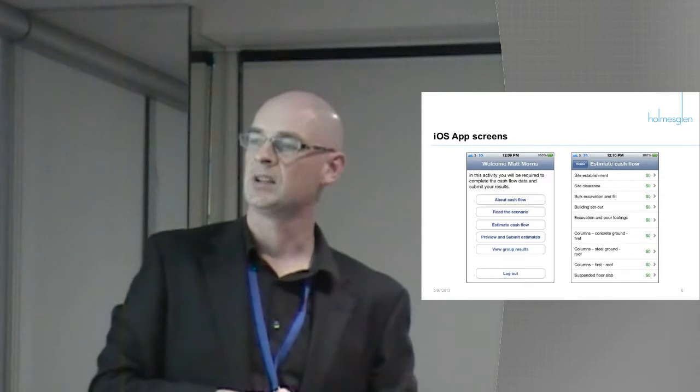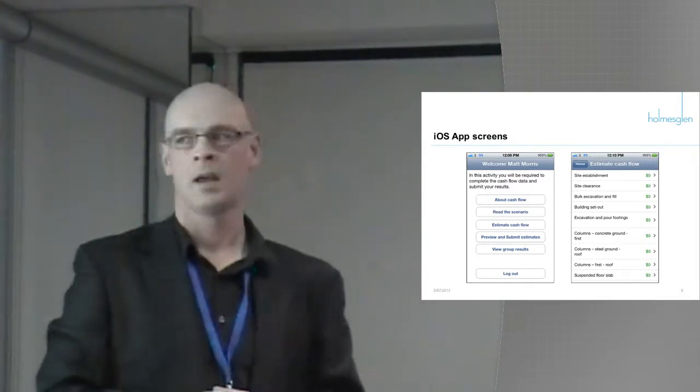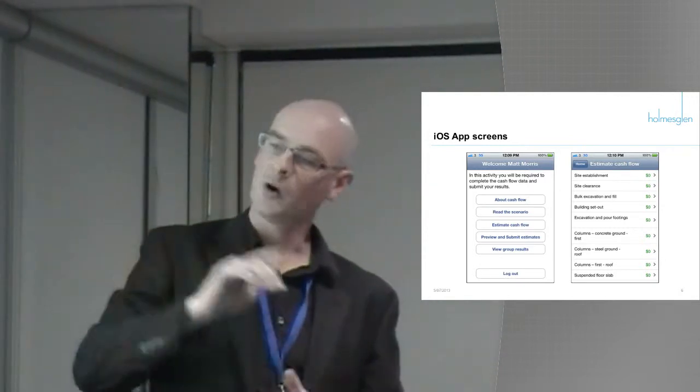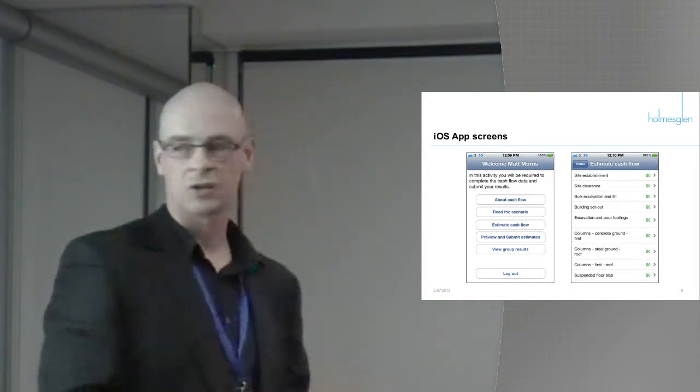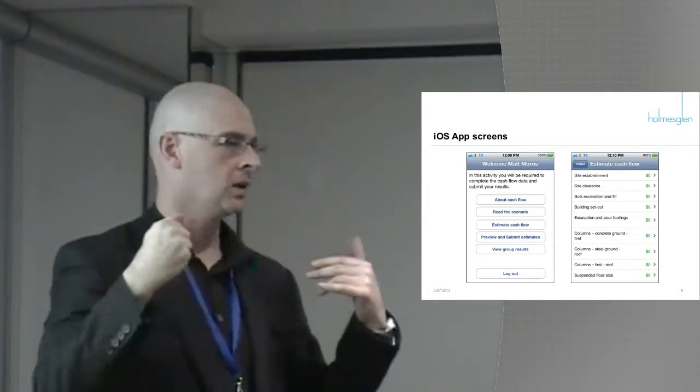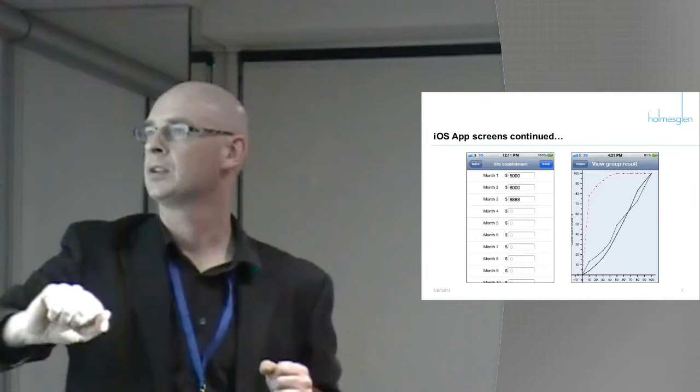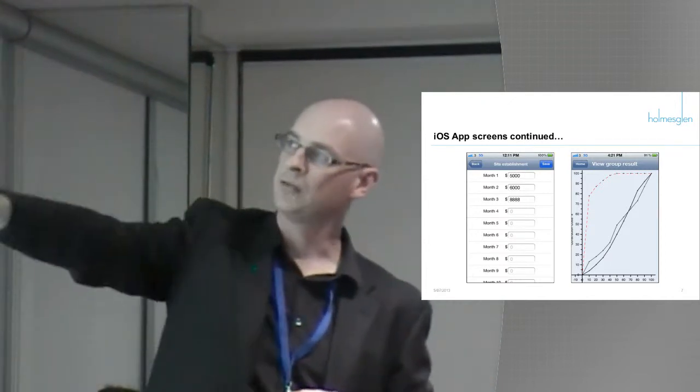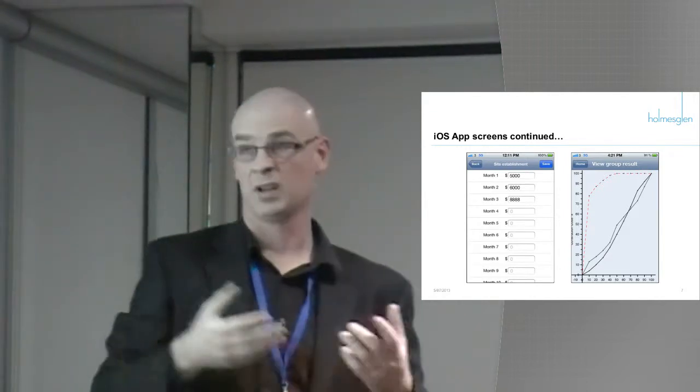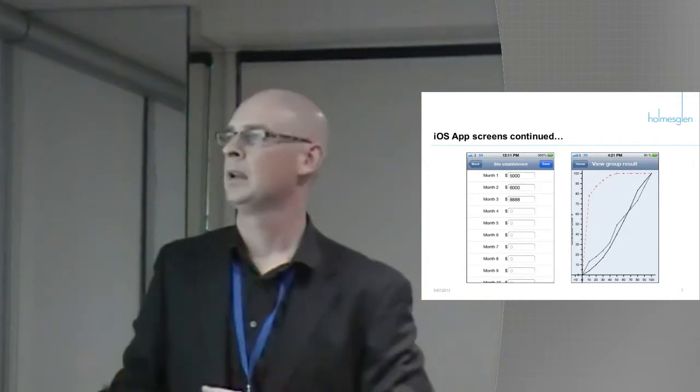After estimate cash flow, we've got preview and submit estimates. So what happens there is you get to have a look at a plot of your data and have a look at the graph and say, yeah, I think that looks how it should. And you can submit it, which will submit that data to a learning record store using Tin Can API statements. The final button was actually an interesting addition. Once you've submitted your data, you can actually go into view group results. And it will show you, which is fantastic, but it will also pull in all the other students' graphs as well. So the red line there, the dotted red line is your result and the others are the other students. Which is really good in the classroom, particularly when we trialled it. Students were able to compare and discuss why people's graphs differ.